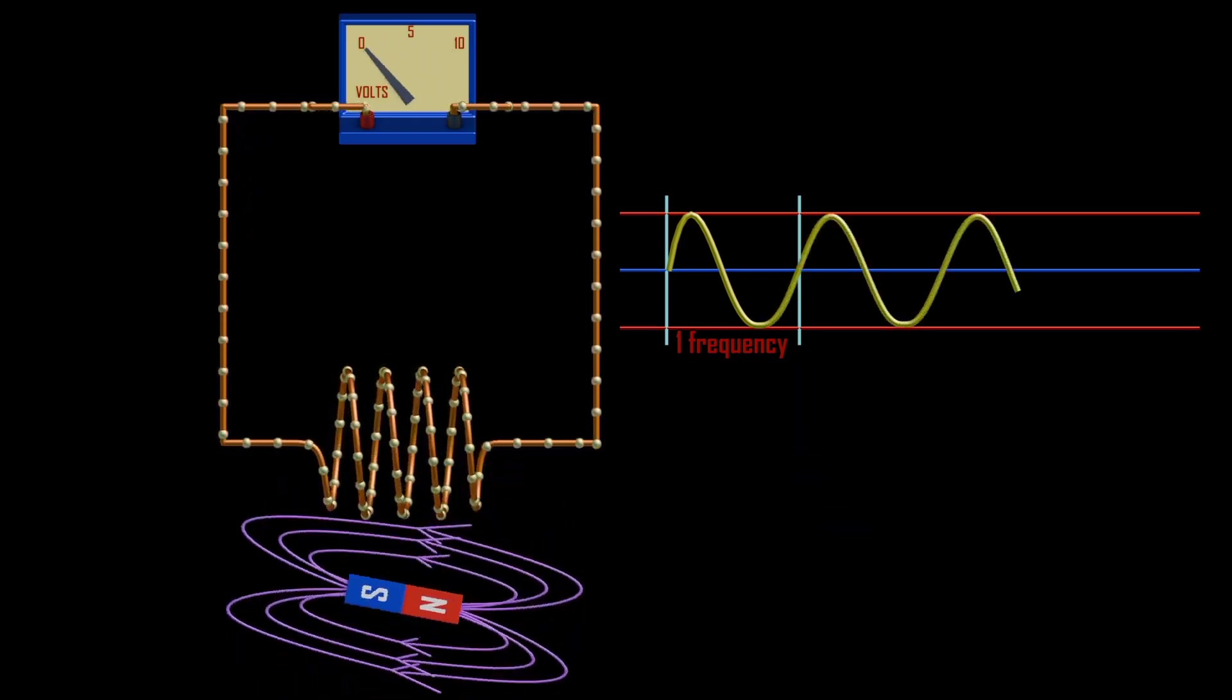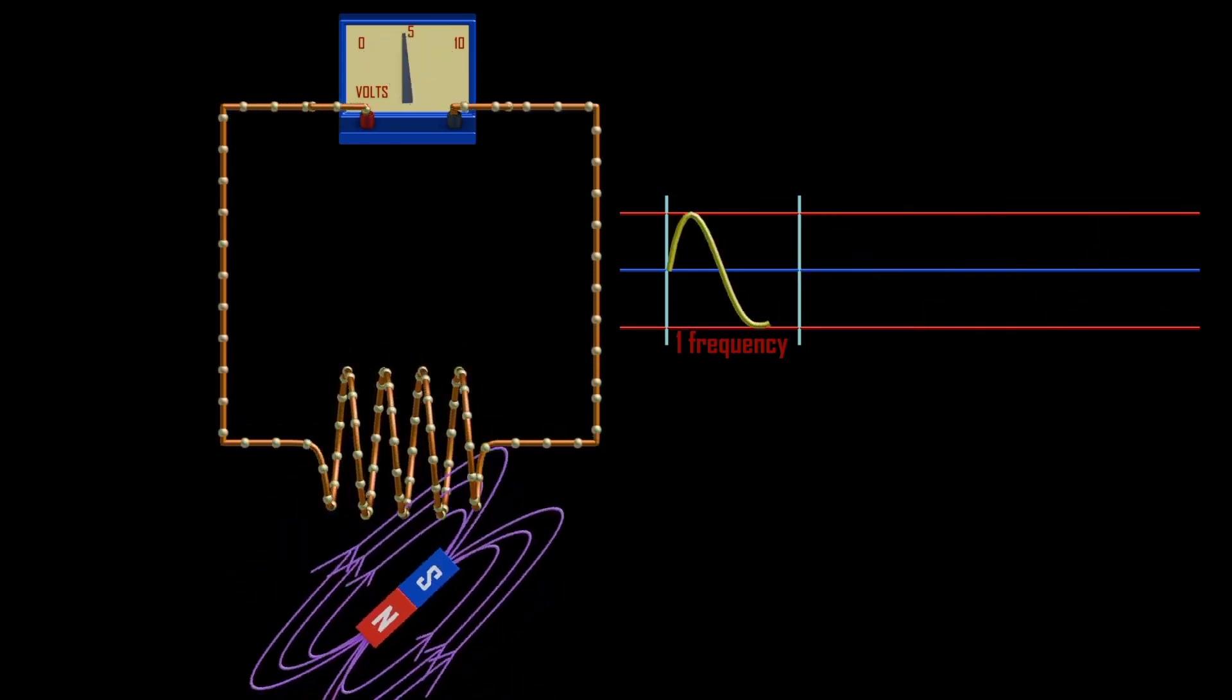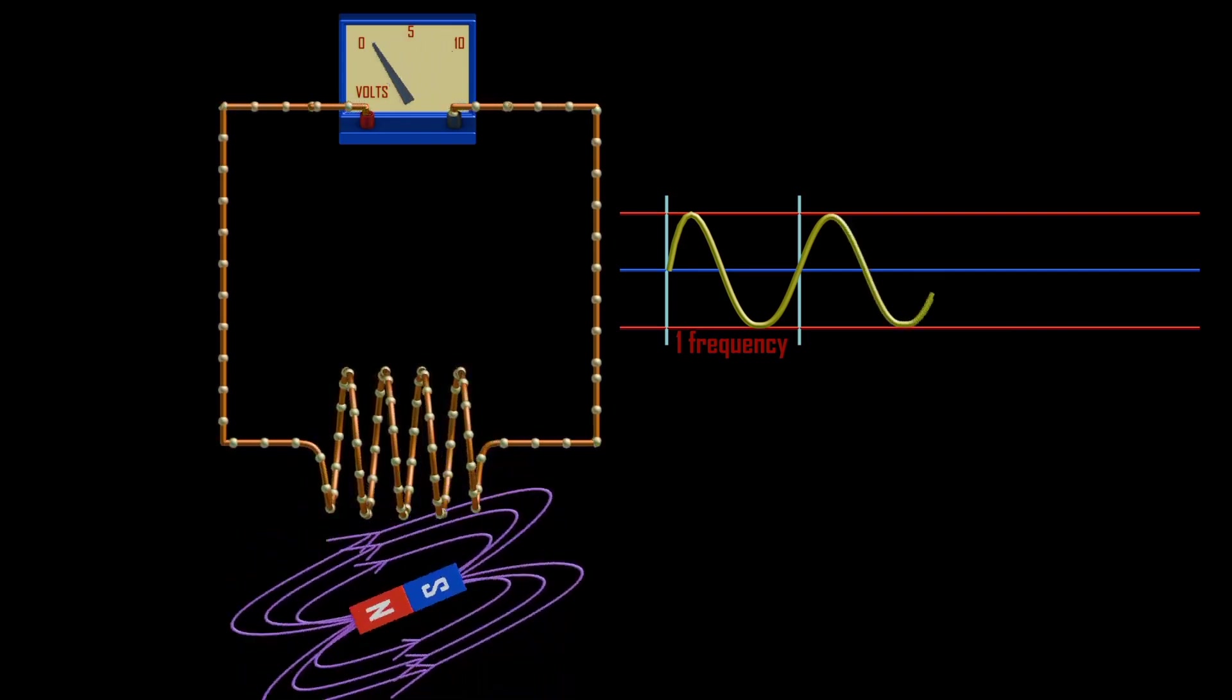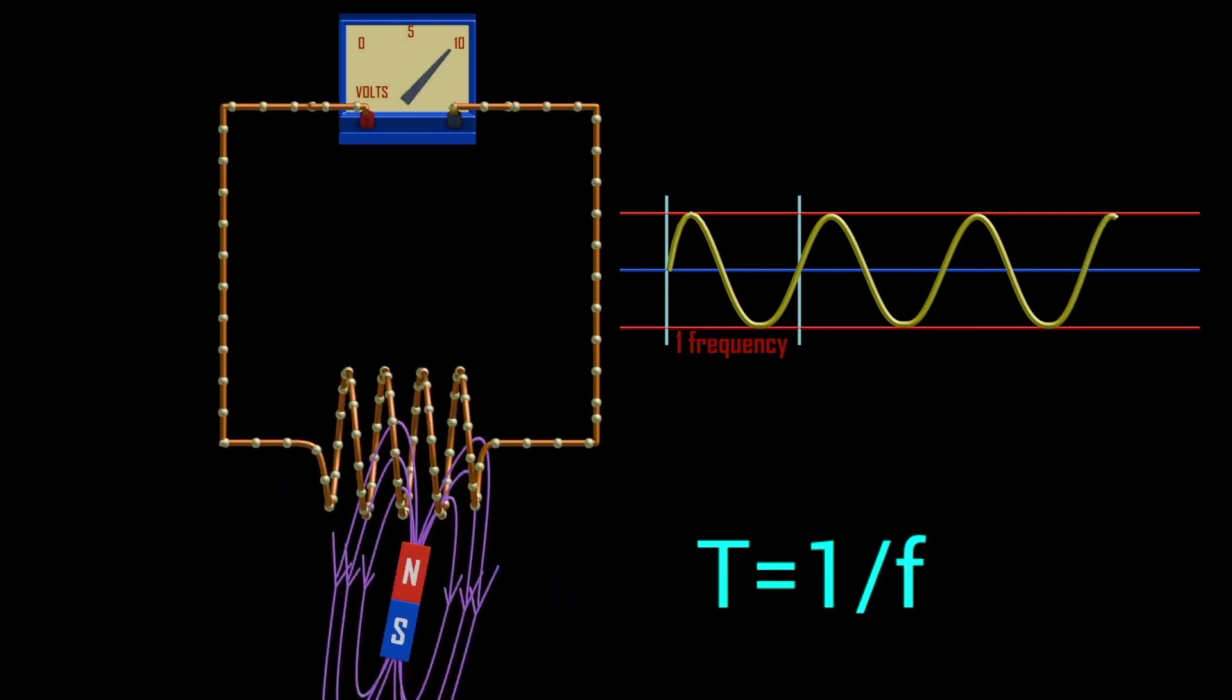When frequency of a phase is 50 Hz, it means it gone 50 revolutions within one second. Similarly, if it is 60 Hz, it means it has gone 60 revolutions per second. In regards to the formula T equal to one over frequency.